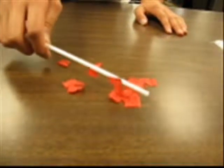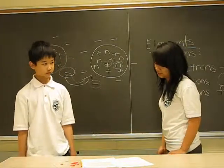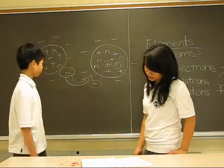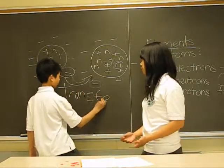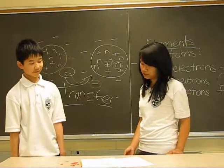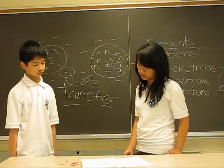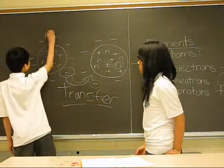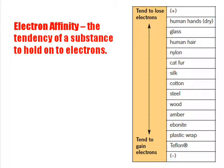No electrons are lost during charging, but they are transferred. When rubbing these two objects together, they become charged. Both objects are neutral until an electron is transferred into another object, which changes the charge of the object. Different substances have different abilities to hold on to electrons. The tendency of a substance to hold on to electrons is called electron affinity.